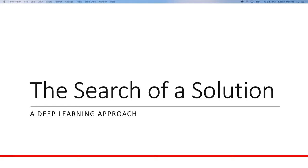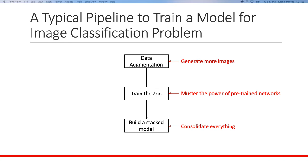Now the search for a solution. For pretty much any image classification problem, people go through three steps: first, apply data augmentation to generate more training images; second, use a pre-trained model and modify it to fit the problem; third, build an ensemble — these days the most popular ensemble is the stacked model.